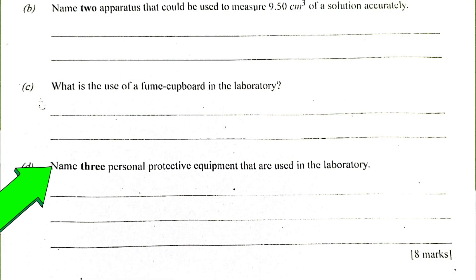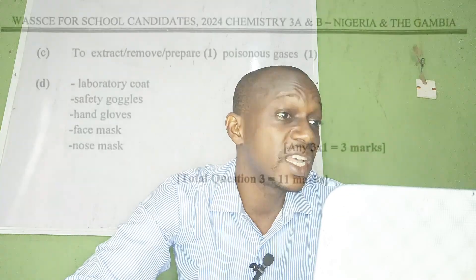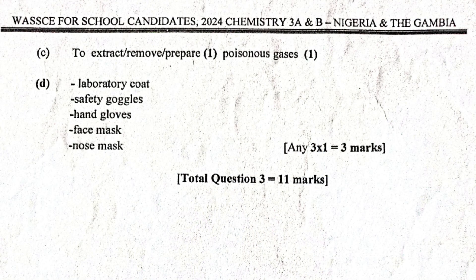So let's go to D now. D. Name 3 personal protective equipments that are used in the laboratory. We have a lot of protective equipment. A lot. Laboratory coat, safety goggles, hand gloves, face mask, nose mask. So, if you look at it properly, laboratory coat, safety goggles, hand gloves, face mask, nose, you can also mention a lot. You can mention face shield and a lot like that. So once you have mentioned what is correct, it will be correctly marked.